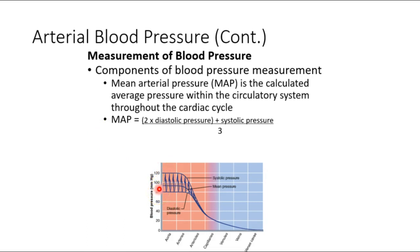We also have mean arterial pressure. With systolic around 120 and diastolic around 80, you actually spend two times as much time in diastole as in systole. So we count diastolic pressure twice, add in systolic once, then divide by three — that gives you mean arterial pressure.